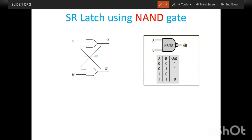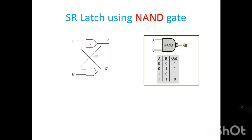Today we are going to study SR latch using NAND gate. SR latch using NAND gate is also called an active low latch. In this circuit, cross-connected NAND gates are used. As compared to SR latch using NOR gate, S is connected to the first NAND gate and R is connected to the second NAND gate. Since NAND gate is used here, first let's see the truth table of this NAND gate.